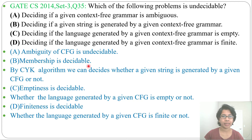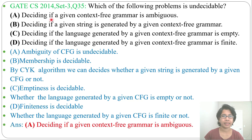So the answer will be A — deciding if a context-free grammar is ambiguous is undecidable. I already discussed in the decision properties of context-free grammars that emptiness, finiteness, and membership are decidable. Just go through that lecture. Thank you.